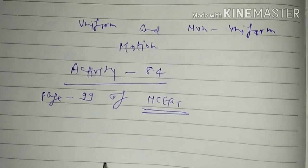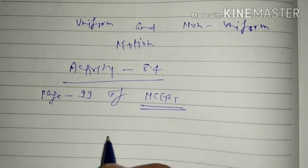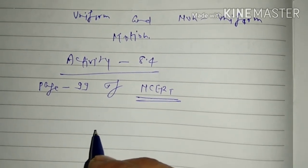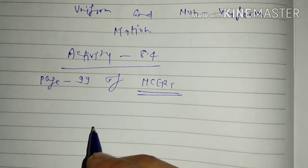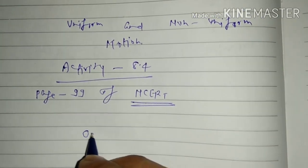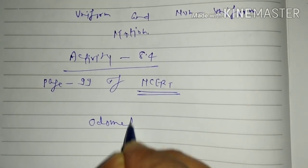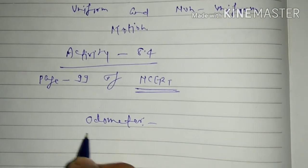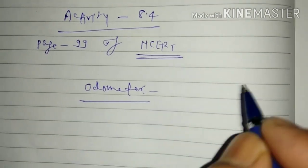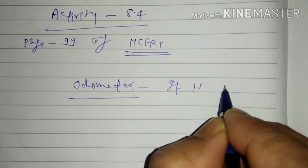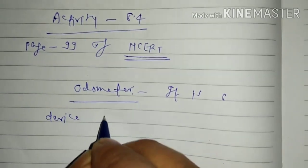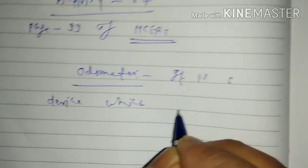So in automobiles there are two devices. One is odometer. So write, what is the meaning of odometer?